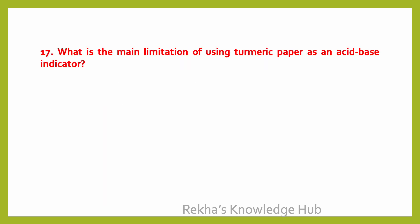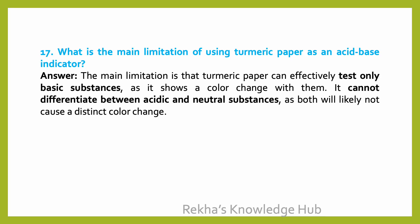What is the main limitation of using turmeric paper as an acid-base indicator? The main limitation is that turmeric paper can effectively test only basic substances, as it shows a color change with them. It cannot differentiate between acidic and neutral substances, as both will likely not cause a distinct color change.